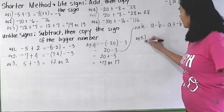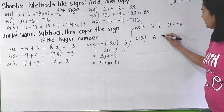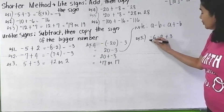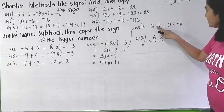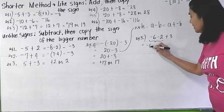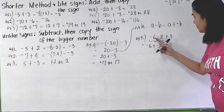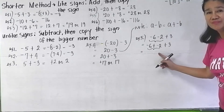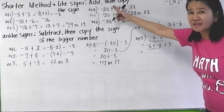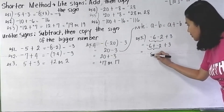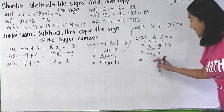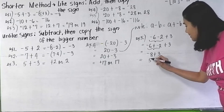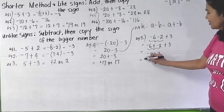What if we have negative 6 minus 2 plus 3? You can rewrite this as negative 6 plus negative 2 plus 3. Observe that the first two have like signs, so add: 6 plus 2 is 8, copy the sign — negative 8 plus 3. They now have unlike signs. Subtract: 8 minus 3 is 5, then copy the sign of the bigger. Your final answer is negative 5.